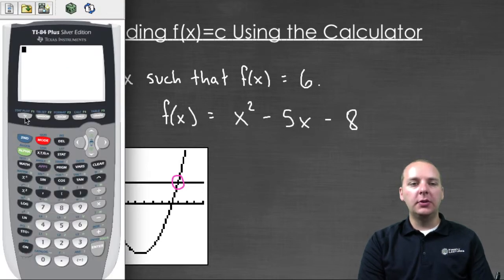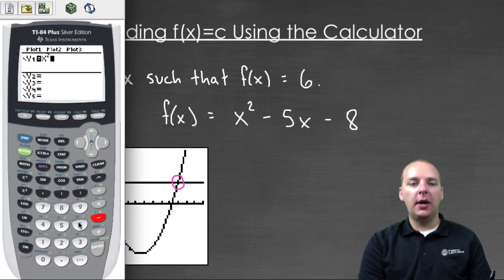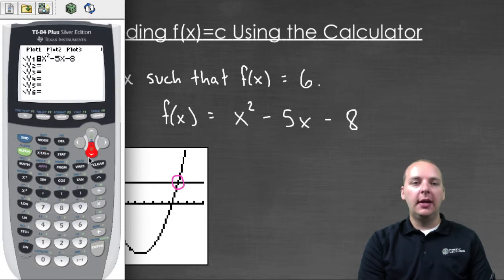So what we'll do first is we'll go to y equals, and we'll graph two functions. We'll graph x² - 5x - 8, that's our parabola. And then we'll also graph y equals six.